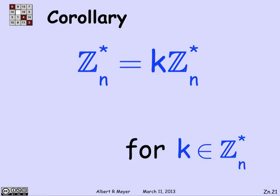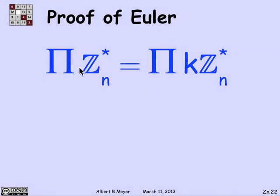So what we've just illustrated is this fact that if you take Z_n* and you multiply it by an element K in Z_n*, you get the same set in a different order. Z_n* is equal to K times Z_n*. Now we're on the brink of proving Euler's theorem. These two sets are the same. Let's multiply all the elements on the left together and multiply all the elements on the right together. Let's take the product of Z_n* and compare it to the product of K Z_n*.